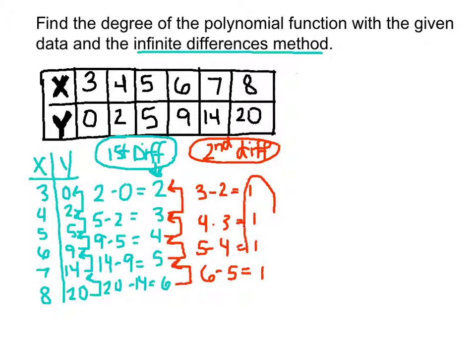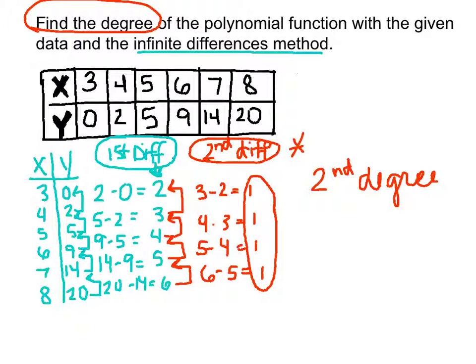As you can see, after taking the second difference, the numbers are all the same. To answer the question, if we stop at the second difference, then the polynomial function has a second degree term as the highest. So it's second degree.